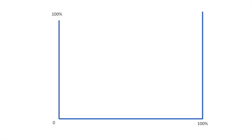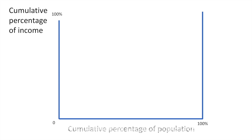Suppose we had a country of 100 people and each of them earned 1% of the nation's income. Each individual represents 1% of the population. If the first person earns 1% of the income and the second person earns 1% of the nation's income, then together they earn 2% of the nation's income. Since they each have an equal share, we say that income is equally distributed.